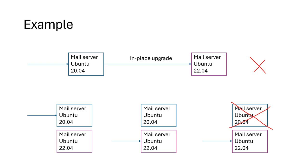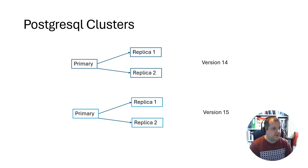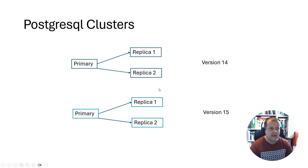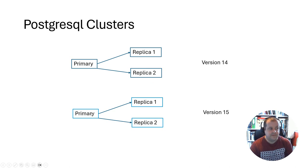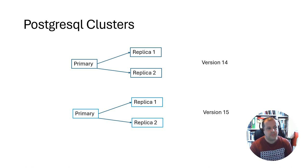For the PostgreSQL part: we have a version 14 cluster in VirtualBox with a primary and two standby replicas, and we want to end up with a version 15 primary and two version 15 replicas. In the next video, we'll look at the options available in PostgreSQL, the pros and cons of each, and why using logical replication is the best way to achieve not only a safe migration but one with the shortest possible downtime. Stay tuned and I'll see you in the next video.